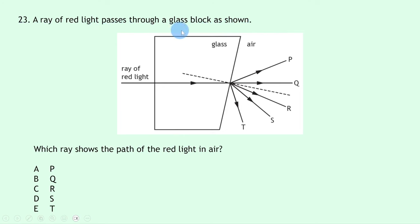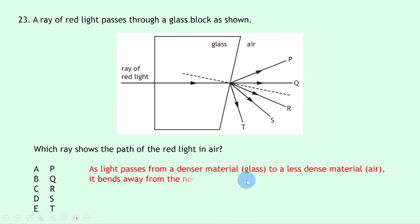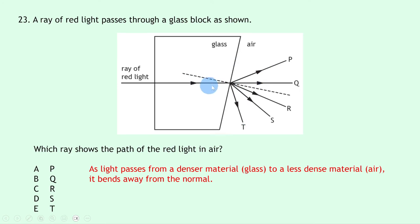Question 23: a ray of red light passes from a glass block into air. As light moves from a denser material (glass) to a less dense material (air), it bends away from the normal. The incident ray is below the normal, so the refracted ray must also be on the same side. Ray P shows bending away from the normal on the correct side, so the answer is A.